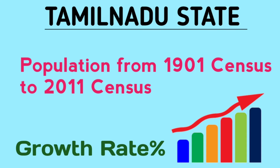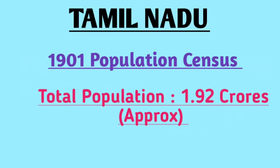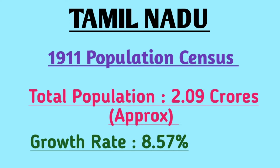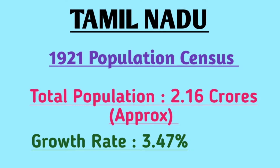In the 1901 population census, the total population of Tamil Nadu was 1.92 crores. In the 1911 population census, the total population of Tamil Nadu was 2.09 crores approximately, in which the growth rate was 8.57 percent — that means the population of Tamil Nadu from 1901 to 1911 grew at a rate of 8.57 percent.